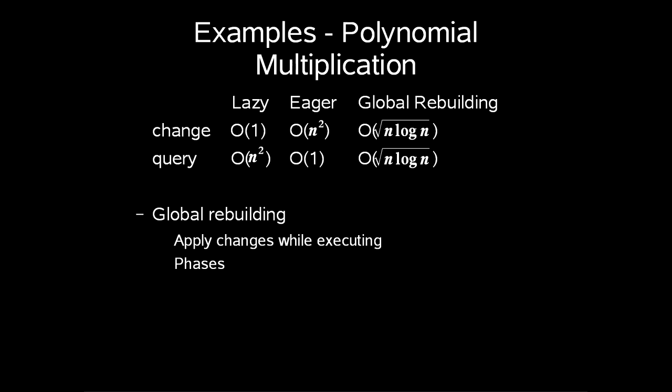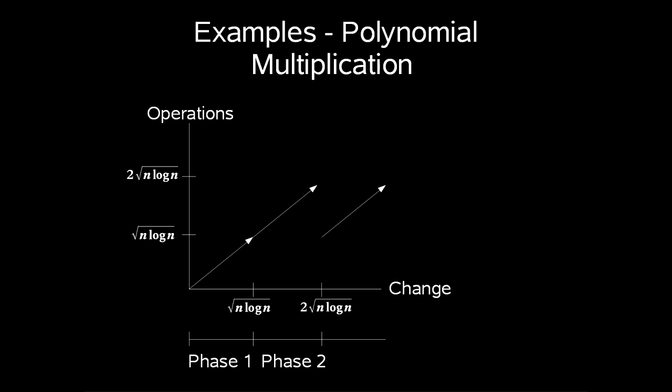An even faster way of doing this would be to use a technique called global rebuilding. So what we do is that we for each square root n log n change, we begin a new phase. In phase t, which consists of this square root n log n change, we compute output corresponding to the input at the start of phase t and do square root n log n operations per change. So when we have to answer a query, we are square root n log n changes behind. So we will of course have to apply these changes on the newest result we have.